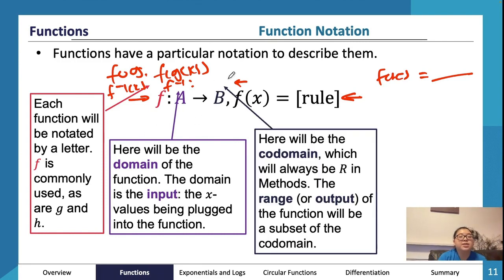After that we get something called the codomain. The codomain in Methods is always going to be R, regardless of what function, how weird, how funky. It will always be R here. We can get rid of the B and just put an R there.